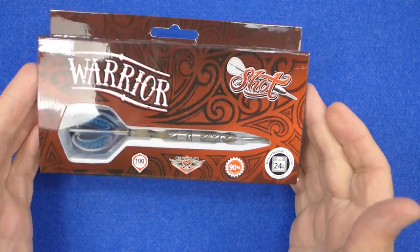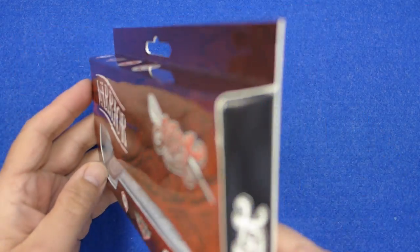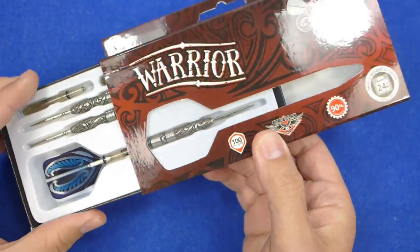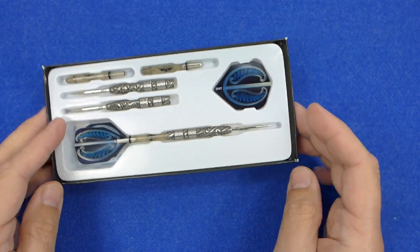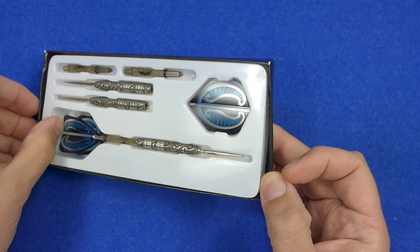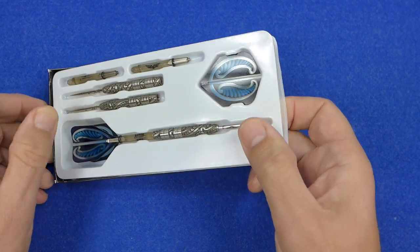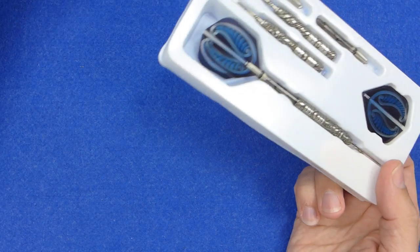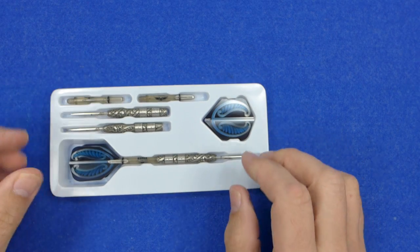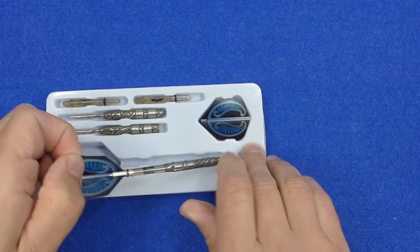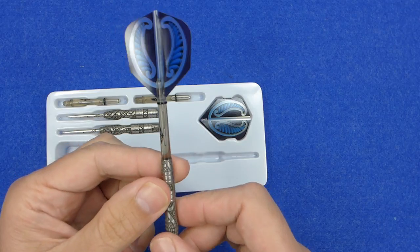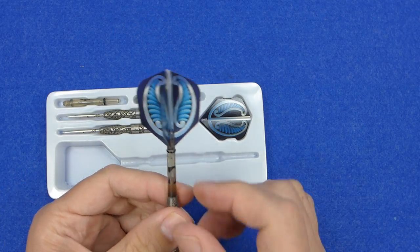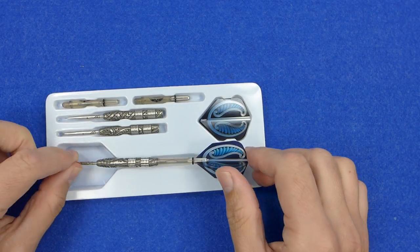As with the other darts in the Shot range they come in this neat packaging which is a cardboard outer sleeve and inside you've got a cardboard tray and a plastic tray holding the contents. Underneath there is a sticker with the weight guarantee and the darts are supplied with some eagle claw stems in in-between size and these 100 micron custom designed flights.